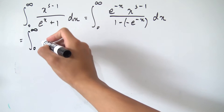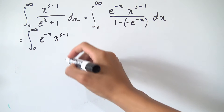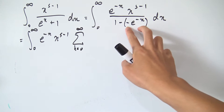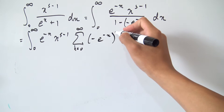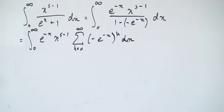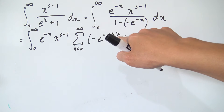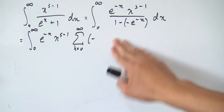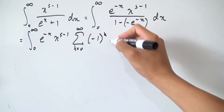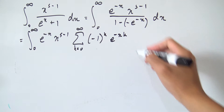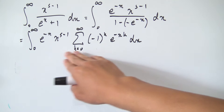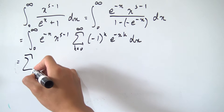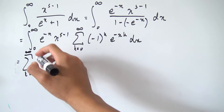Since we have a plus, we can turn it into a double negative and subtract off the additive inverse of e to the minus x. You can check that negative e to the minus x is always between 0 and 1 on this interval, so the geometric series will converge. We can then rewrite the integral from 0 to infinity of e to the minus x times x to the s minus 1, times the geometric series sum from k equals 0 to infinity of negative e to the minus x to the kth power, dx.